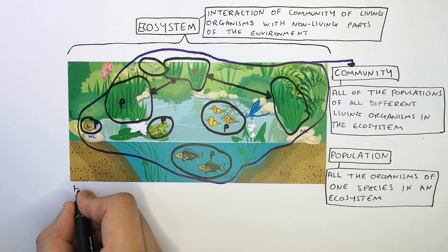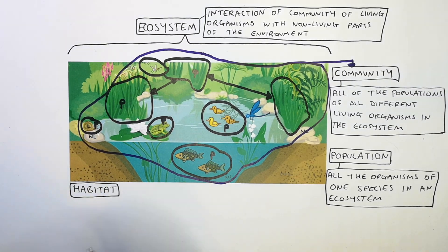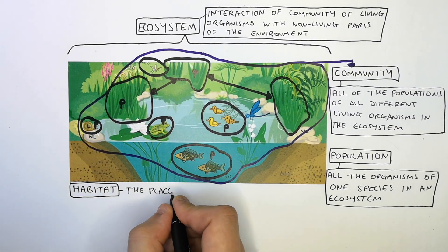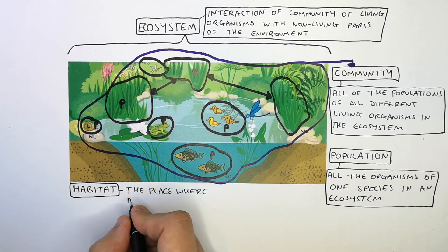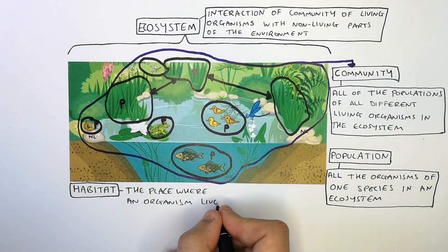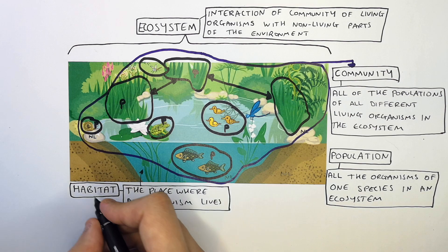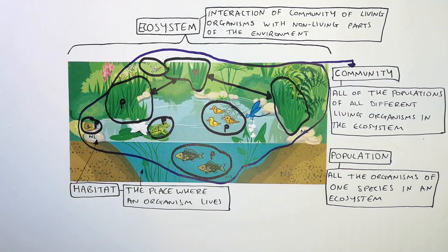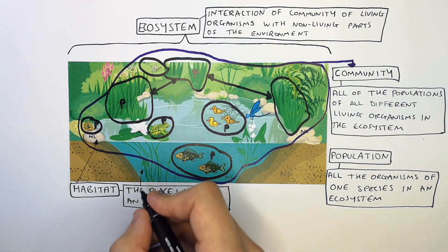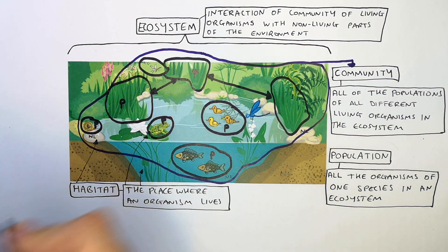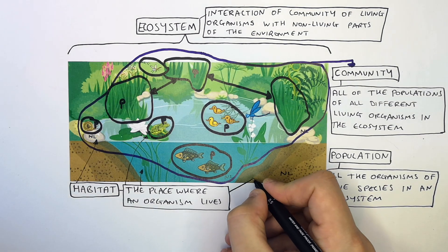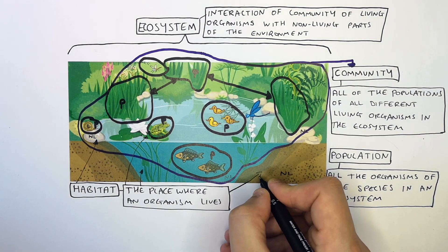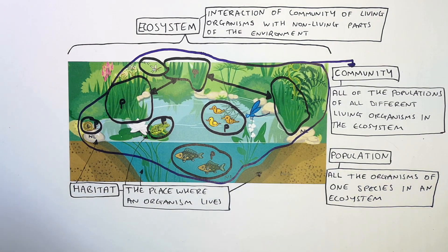Another key word we have to know is the habitat, which is the place where an organism lives. In this case, it can be the rock, the soil, the lily, and the grass. Any part where the organism lives is its habitat.